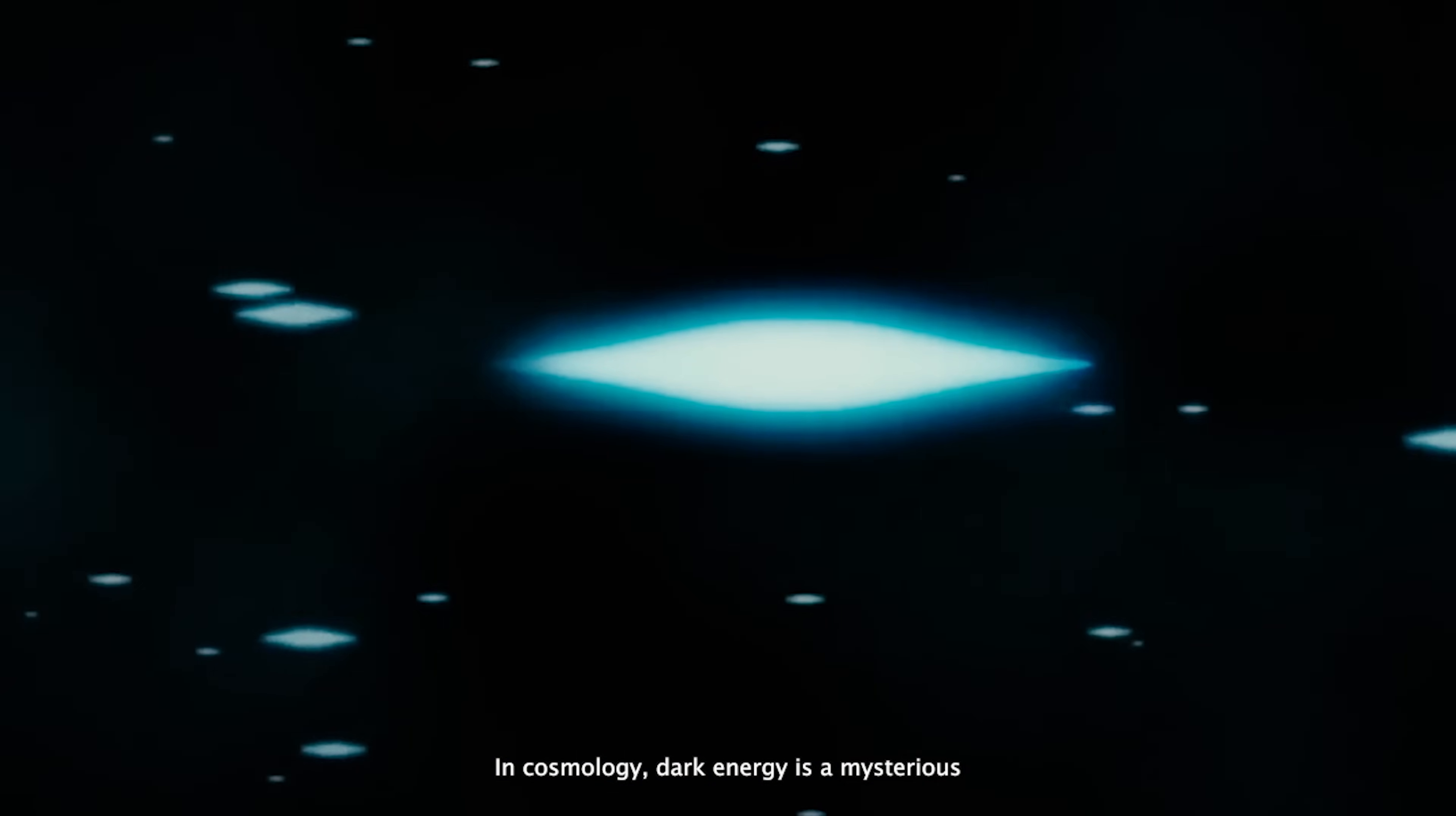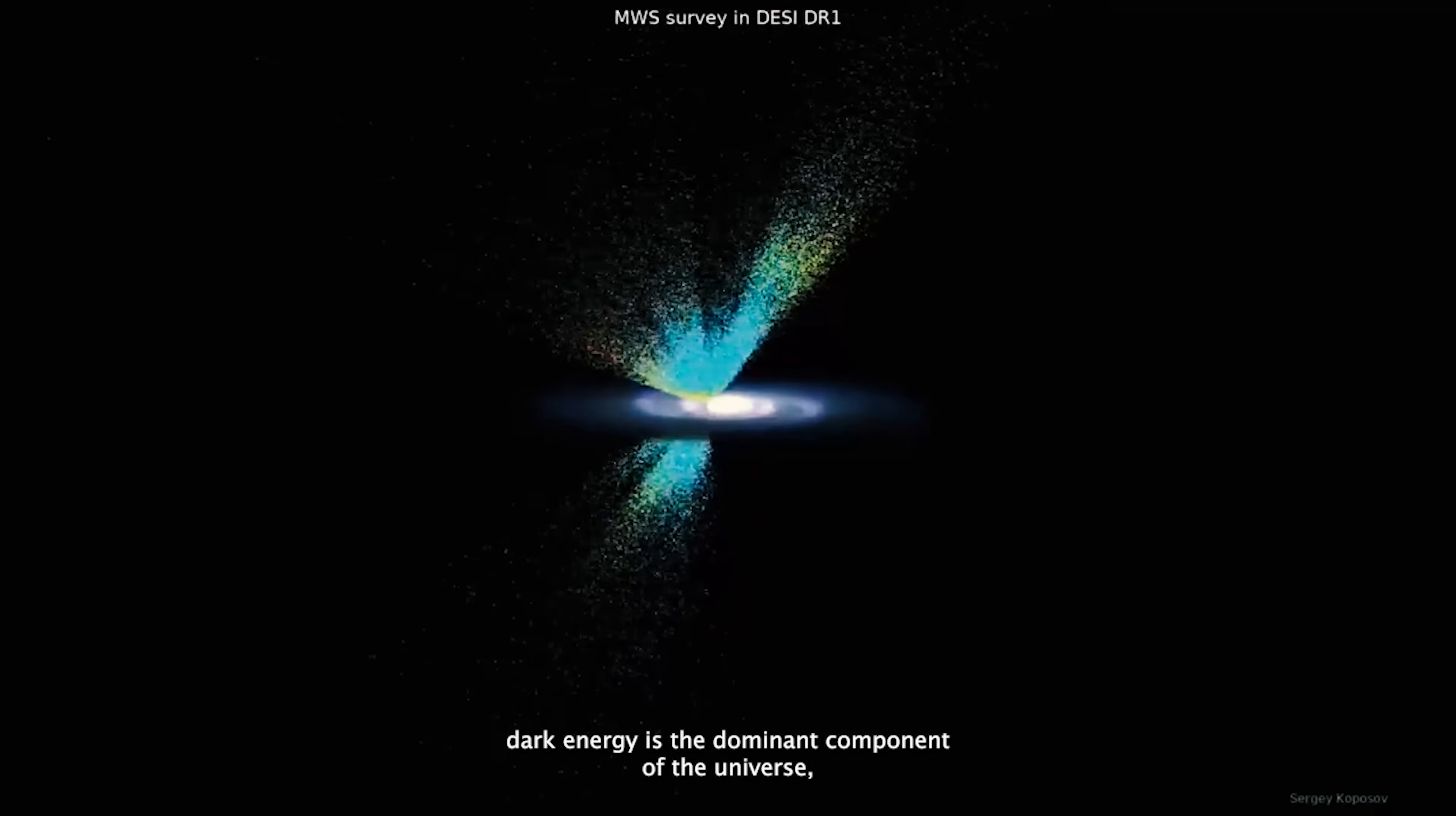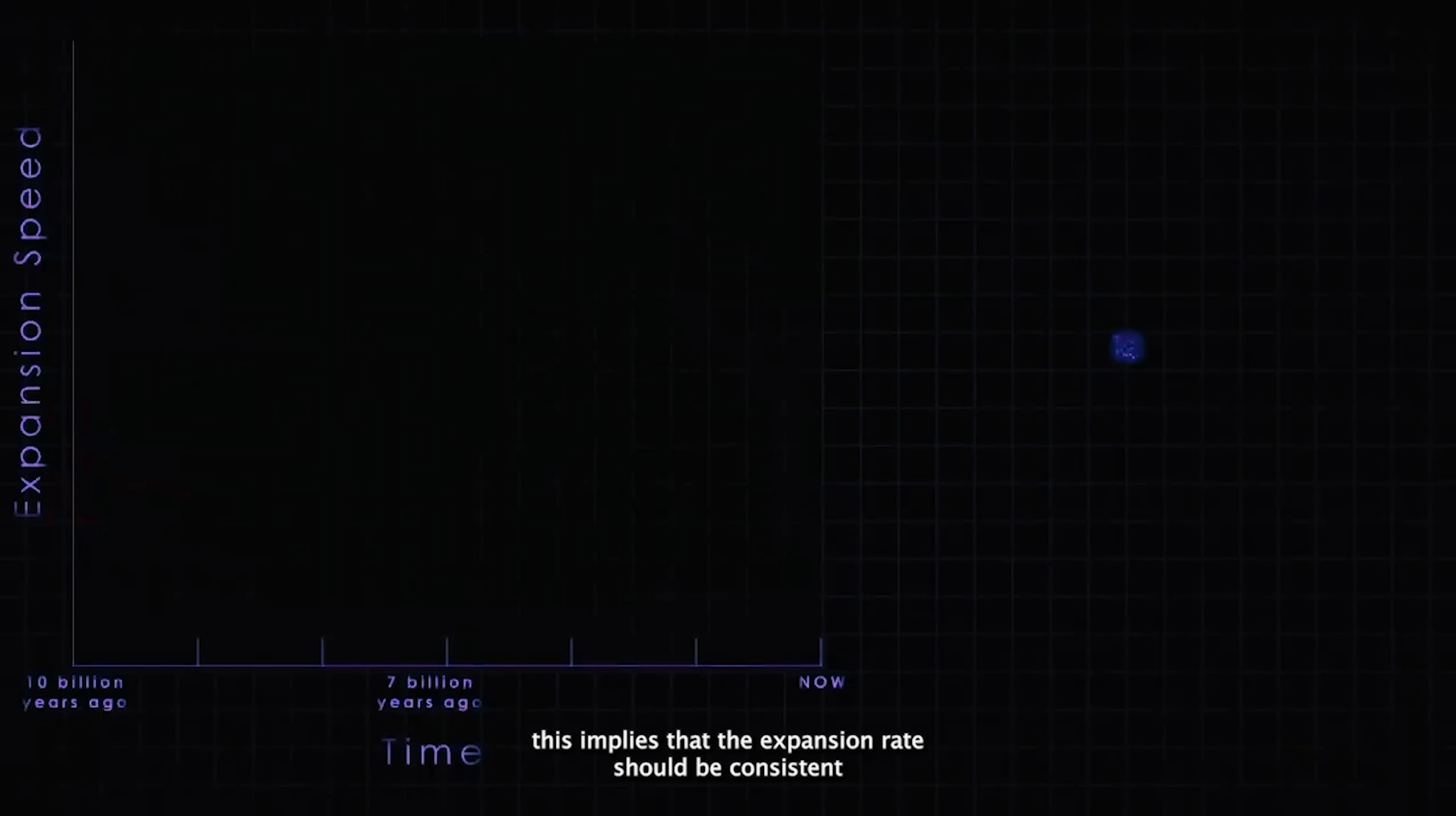In cosmology, dark energy is a mysterious form of energy that influences the universe's expansion. Its primary effect is to accelerate the expansion of the universe, but its role may be more intricate than we once believed. According to the standard cosmological model, dark energy is the dominant component of the universe, accounting for 68% of the total energy in the observable universe today. It is believed to be uniformly distributed across space, which means it should have the same effect everywhere. Since dark energy is responsible for the accelerated expansion of the universe, this implies that the expansion rate should be consistent throughout the entire universe.